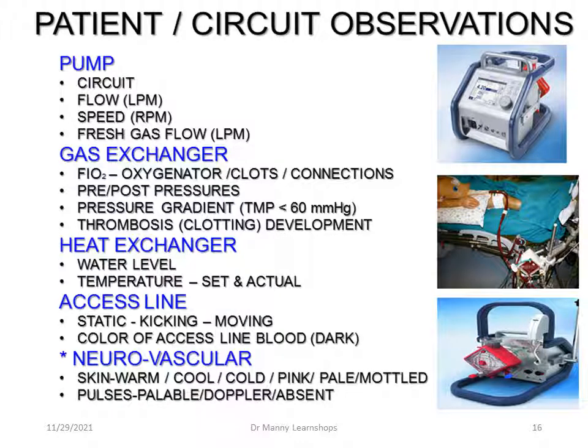Patient circuit observations should include the pump circuit flow, speed, fresh gas flow in litres per minute, the gas exchanger, oxygen percentage, and observation of the oxygenator for clots and connections. Monitor pre- and post-pressures and transmembrane pressure gradients, observing for clot development. For the heat exchanger, observe the water level and temperature setting versus actual temperature in the access line. Observe for static kicking movement, which is potentially abnormal — dark blood with static kicking could indicate clotting or obstruction.